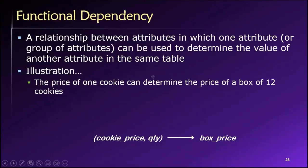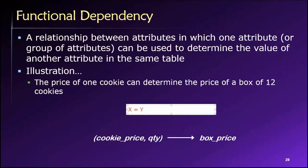So it's a function, right? If you want to link this back to some basic math concepts, we could say something like X equals Y times Z. I'll make that a better color. So it's a function, right? The box price in this example is a function of the cookie price multiplied by the quantity. This is a functional dependency. The value of the box price is functionally dependent on the values of these other two attributes.